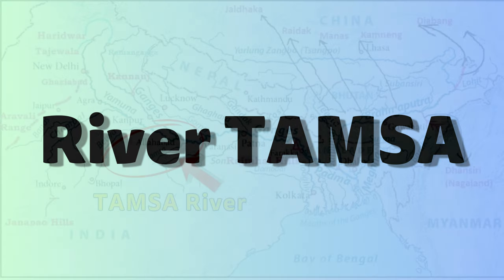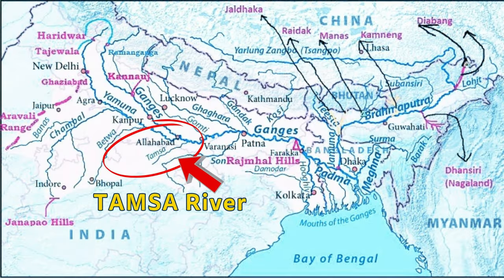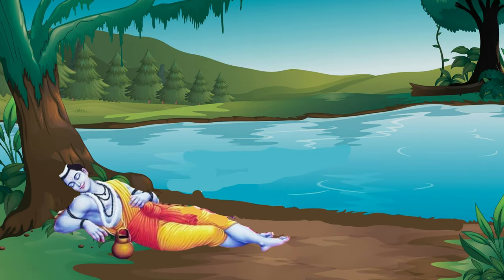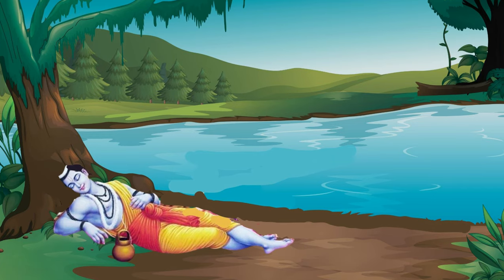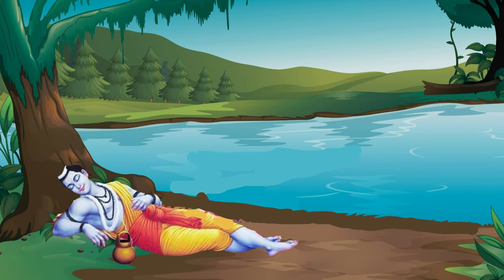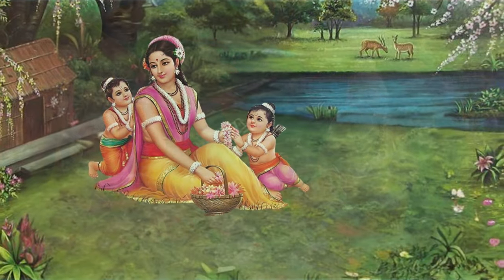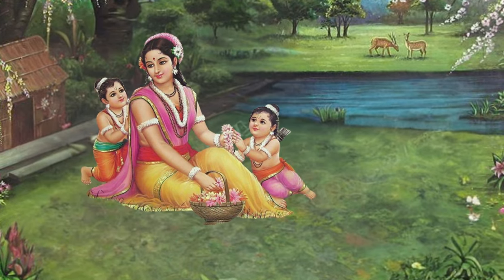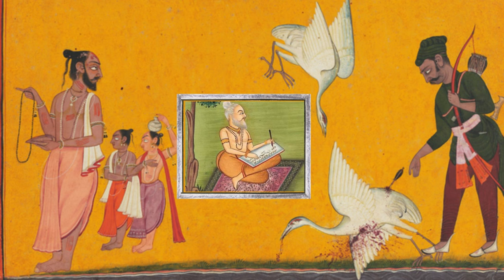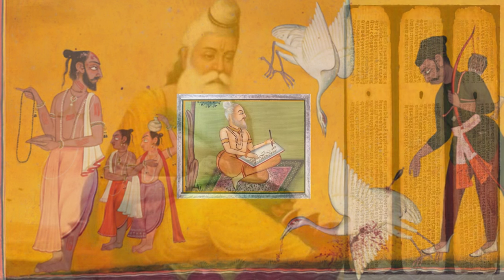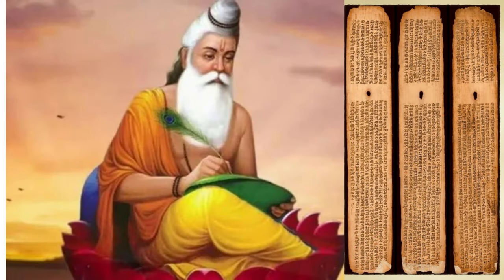River Thamsa: The Thamsa river is a tributary of the Ganga flowing through North India. Shri Ram spent his first night during the 14 years of forest exile near the Thamsa river. Sage Valmiki's ashram was on the banks of the Thamsa river, where Sita lived with her twin sons, Lava and Kusha. It is believed that on seeing the plight of a bird couple, Valmiki created his first verse, the Shloka of the Ramayana.